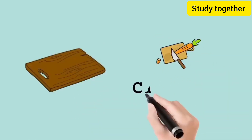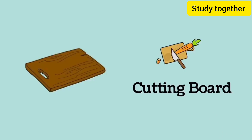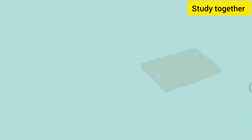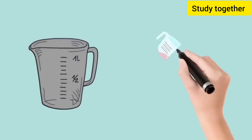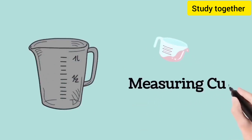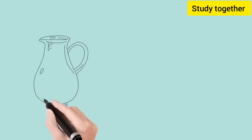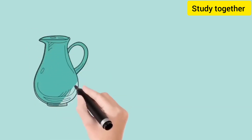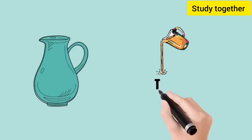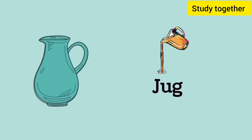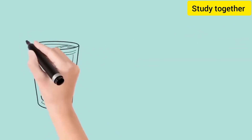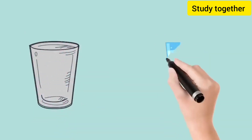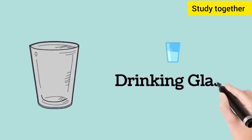This is a cutting board, we call it cutting board. This is a measurement cup, we call it measurement cup. This is a drinking glass, we call it drinking glass.